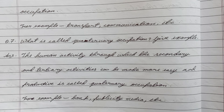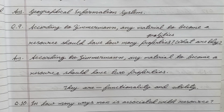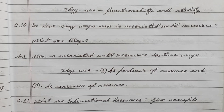Question number eight: The full form of GIS is - answer: Geographical Information System. Question number nine: According to Zimmerman, any material to become a resource should have how many properties, and what are they? Answer: According to Zimmerman, any material to become a resource should have two properties - they are functionality and utility.